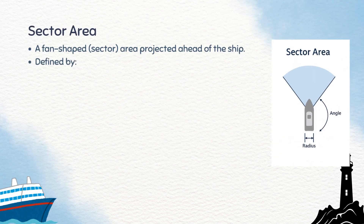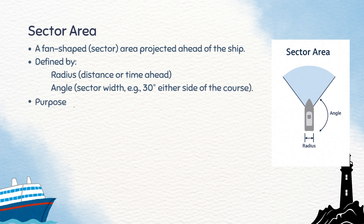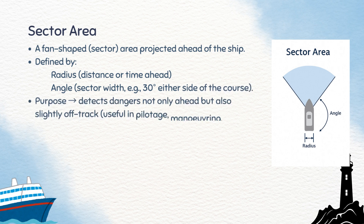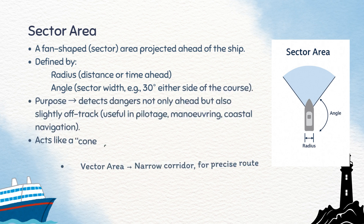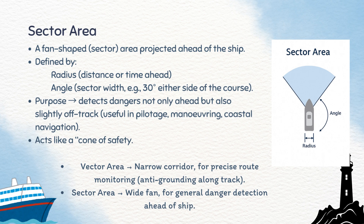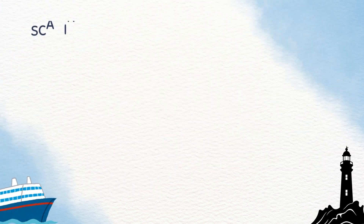The sector area is a fan-shaped zone projected ahead. It covers both the ship's track and slightly off-track areas, making it very useful in pilotage, maneuvering, and coastal navigation. Note that the vector area is used as a narrow corridor for precise route monitoring and anti-grounding along track, while the sector area is used as a wide fan for general danger detection ahead of the ship.